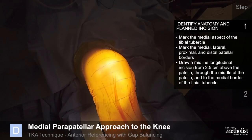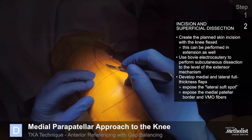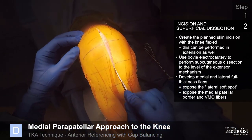Mark the medial aspect of the tibial tubercle, and the medial, lateral, proximal, and distal patellar borders. Draw a midline longitudinal incision from 2.5 centimeters above the patella through the middle of the patella to the medial border of the tibial tubercle. Making the incision with the knee in 90 degrees of flexion produces a shorter incision which provides adequate exposure. I find it easier to make a straight central incision just proximal to the patella continuing to the tibial tubercle. Create the planned skin incision with the knee flexed; if preferred, this can be performed in extension as well.